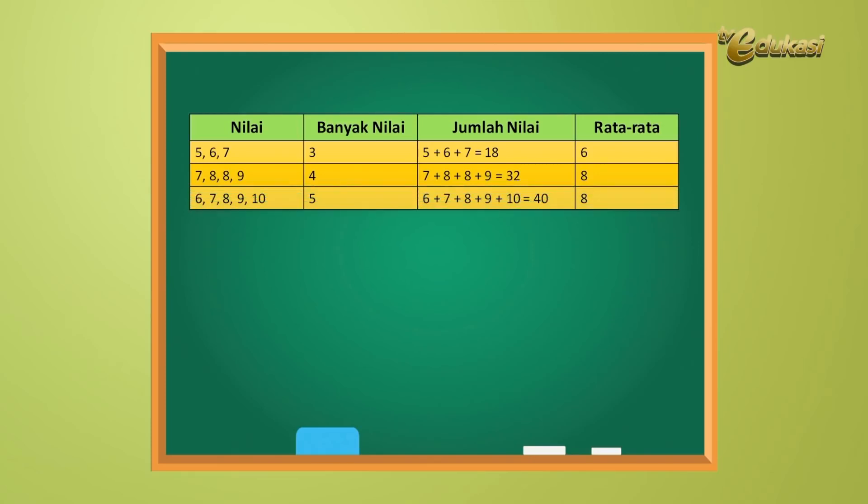Nomor 3, nilainya 6, 7, 8, 9, dan 10. Banyaknya nilai 5. Jumlah nilai 6 tambah 7 tambah 8 tambah 9 tambah 10 sama dengan 40. Rata-rata 8.